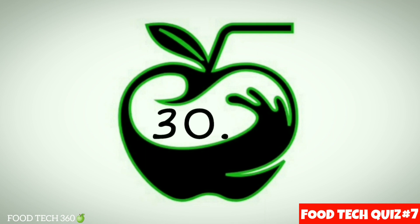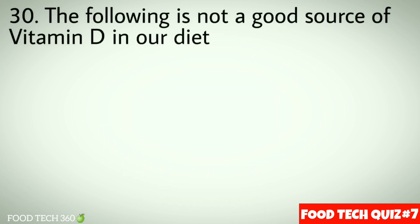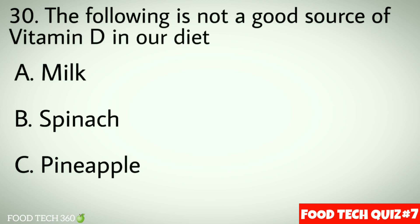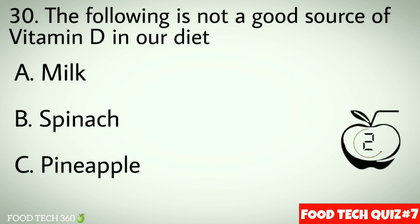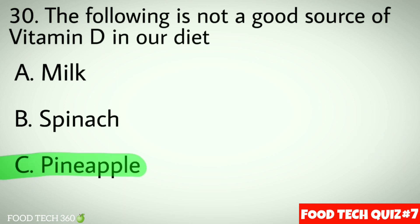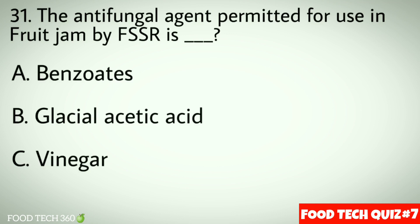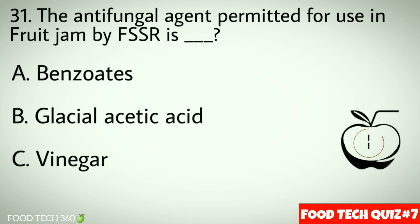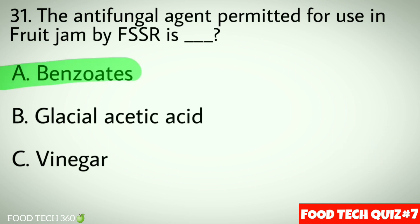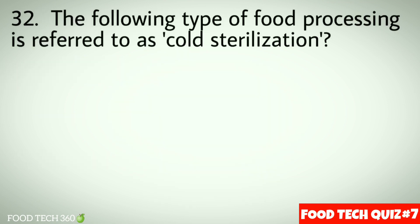Question number 30: The following is not a good source of vitamin D in our diet — options: a) Milk, b) Spinach, c) Pineapple. Correct answer: c) Pineapple. Question number 31: The antifungal agent permitted for use in fruit jam by FSSR is — options: a) Natamycin, b) Glacial acetic acid, c) Vinegar. Correct answer: a) Natamycin.